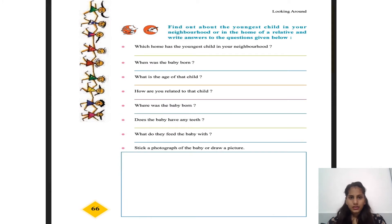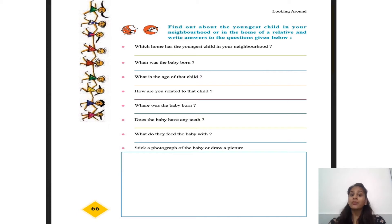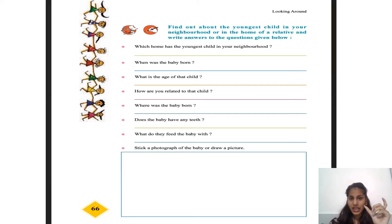Find out about the youngest child in your neighborhood, house, or among relatives and write answers to the given questions. Which home has the youngest child in your neighborhood? When was the baby born? What is the age of that child? How are you related to that child? Where was the baby born? Does the baby have any teeth? What do they feed the baby? Take a photograph or draw a picture of the baby. Do this activity in your textbook.